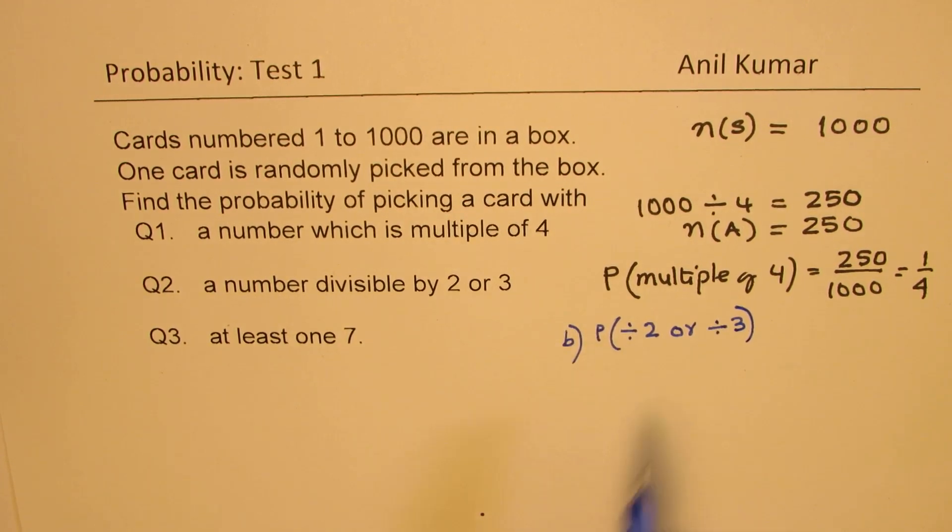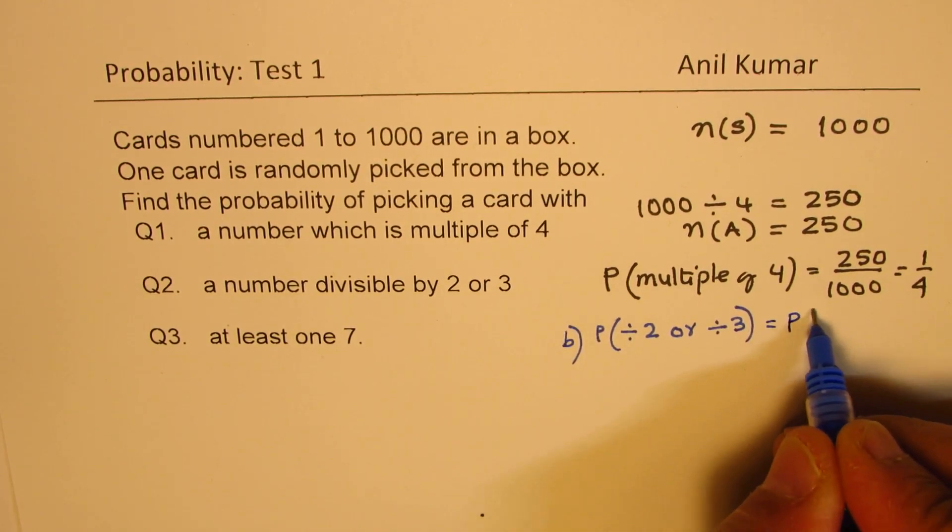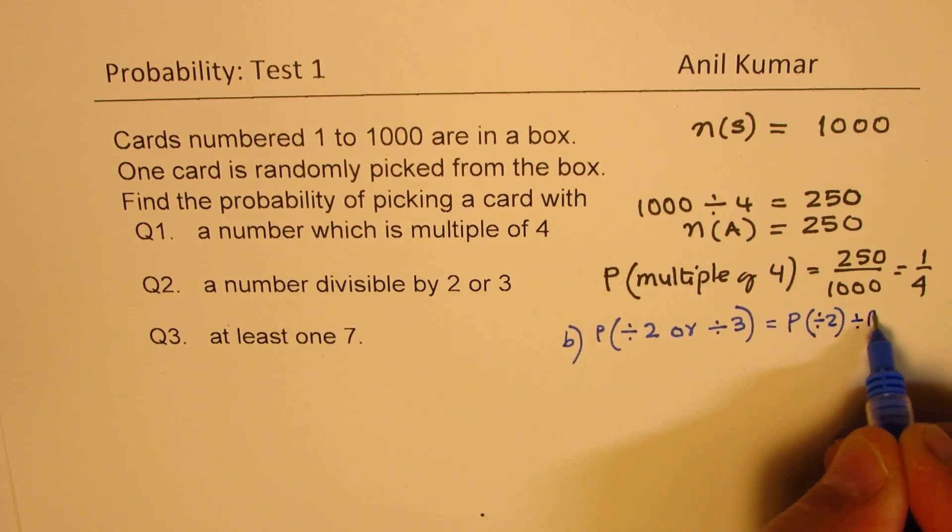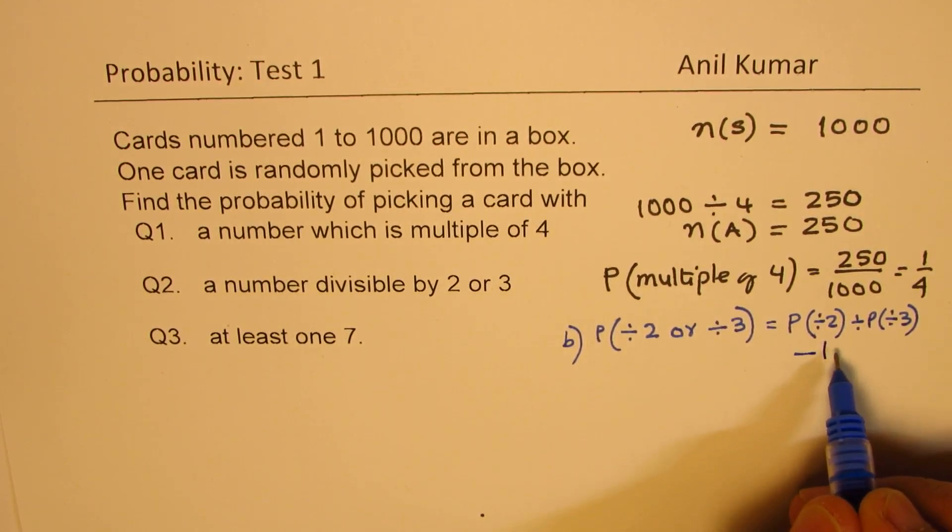So in this case, when we are looking into this probability, we have to write what are the numbers divisible by 2, how many numbers are divisible by 3, but we have to take away what is common—the intersection of those. So basically, that becomes probability of numbers divisible by 2, plus probability for numbers divisible by 3, and from this we should take away the probability for numbers divisible by 2 and 3, that means 6.